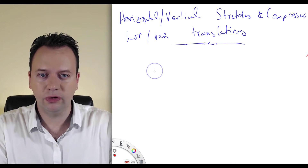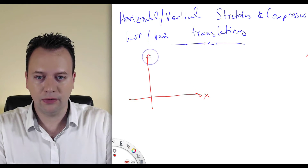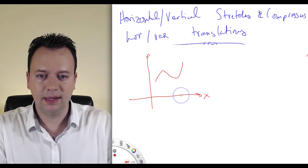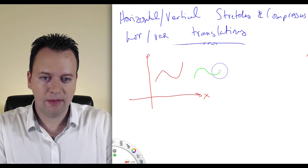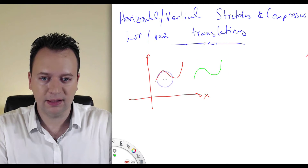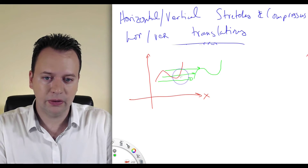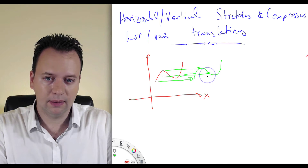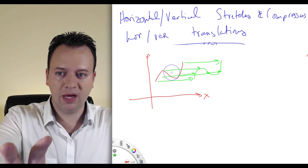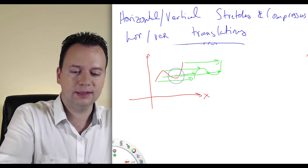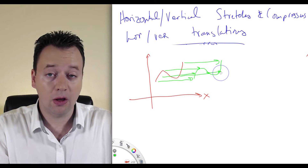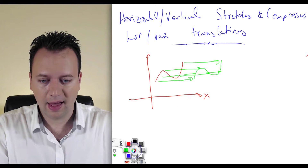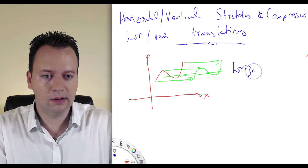What about horizontal and vertical translations? If I have a graph like this, and I take that graph — it's exactly the same, like a copy and paste — but everything slides over to the right. So everything is just picked up and moved over to the right and set back down, basically like drag and drop on your computer. That is called a horizontal translation to the right.